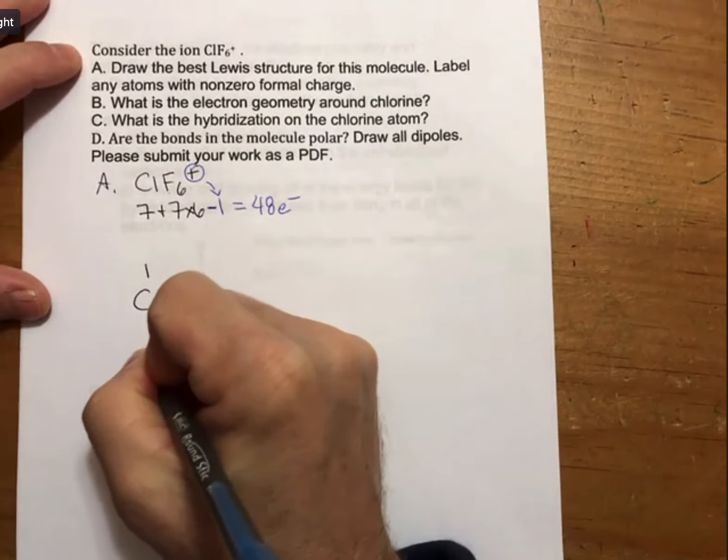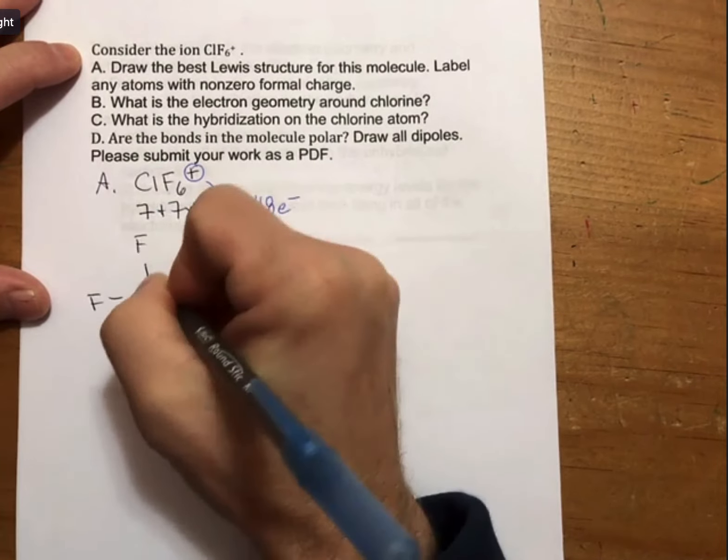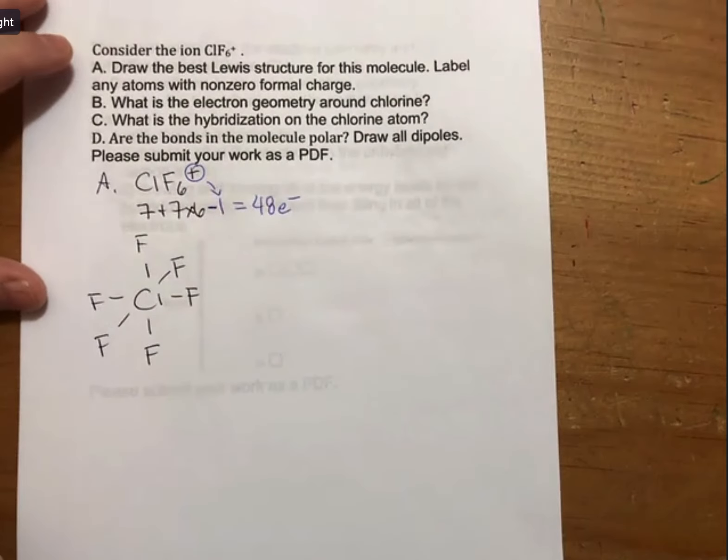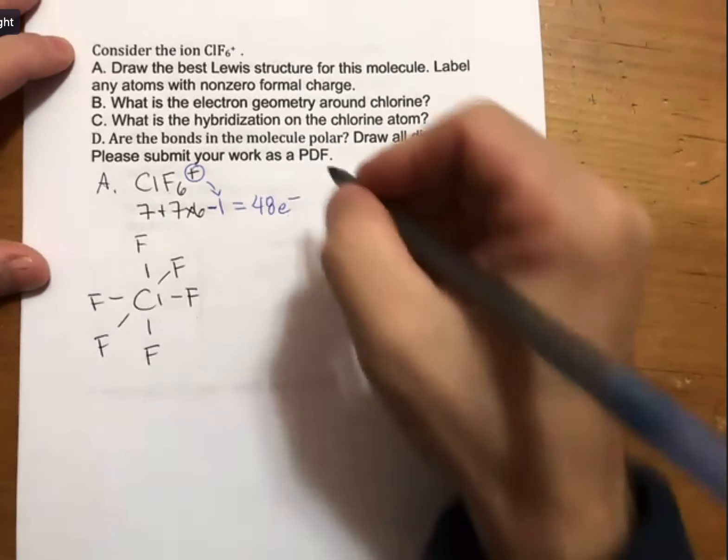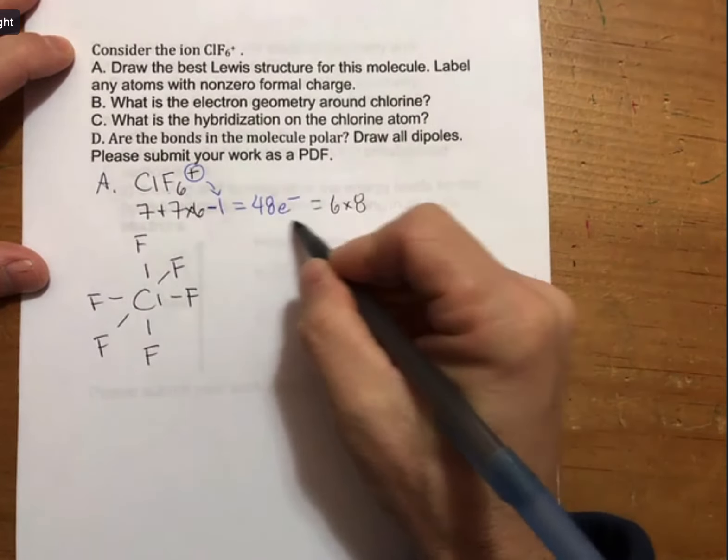48, go ahead and stick all of your chlorines around that central. And what you will find is with 6 of them, because 6 times 8 is 48.